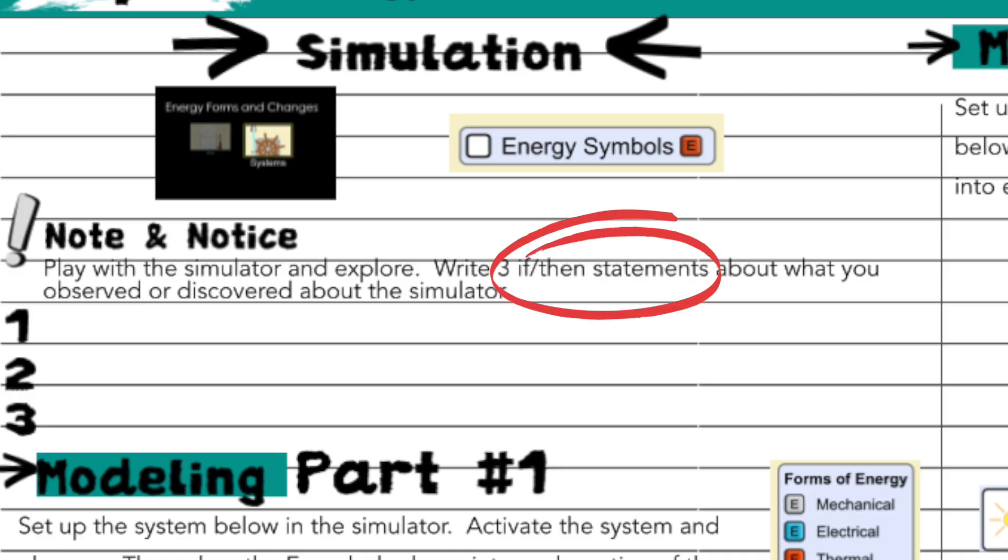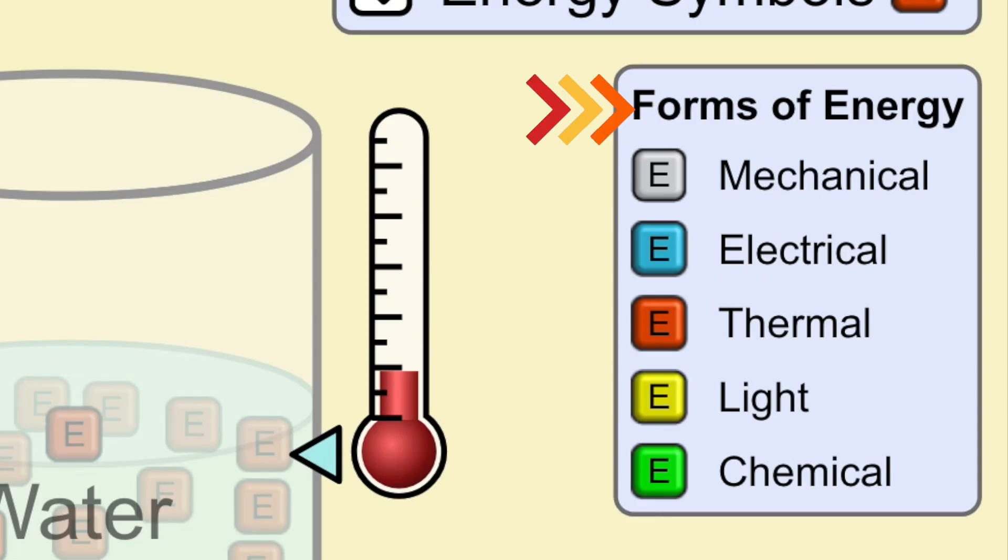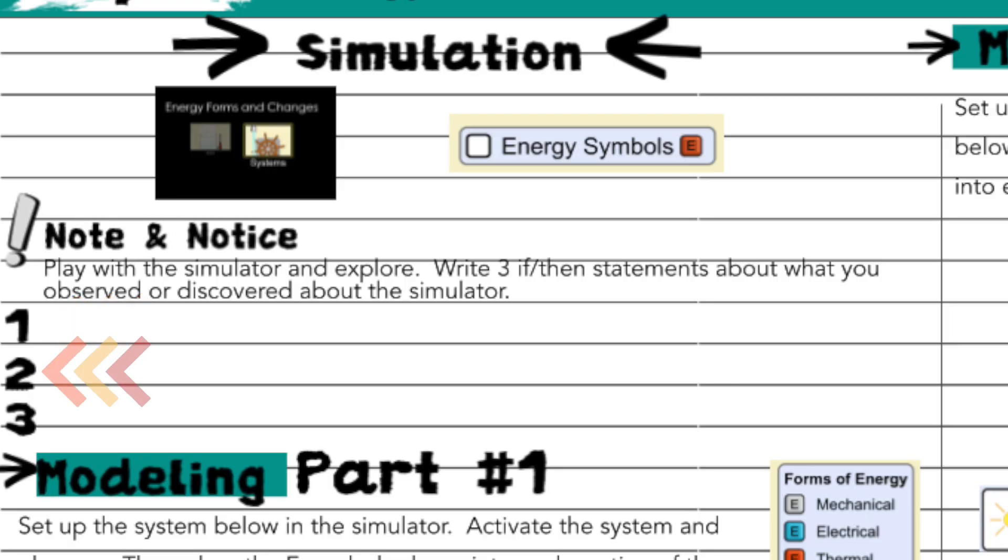Phrase each observation as an if-then statement. In other words, if I change it to a tea kettle, then what happens? As you're writing your if-then statements about your observations, be sure to mention the forms of energy represented by the E's in the simulator. Write those note and notice statements here in your notebook.